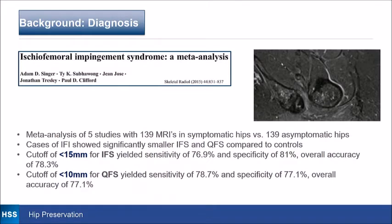A meta-analysis was done on MRI findings in five different studies and showed a cutoff of 15 millimeters for the ischial femoral space and 10 millimeters for the quadratus femoris space as cutoffs that had good sensitivity and specificity for defining impingement.